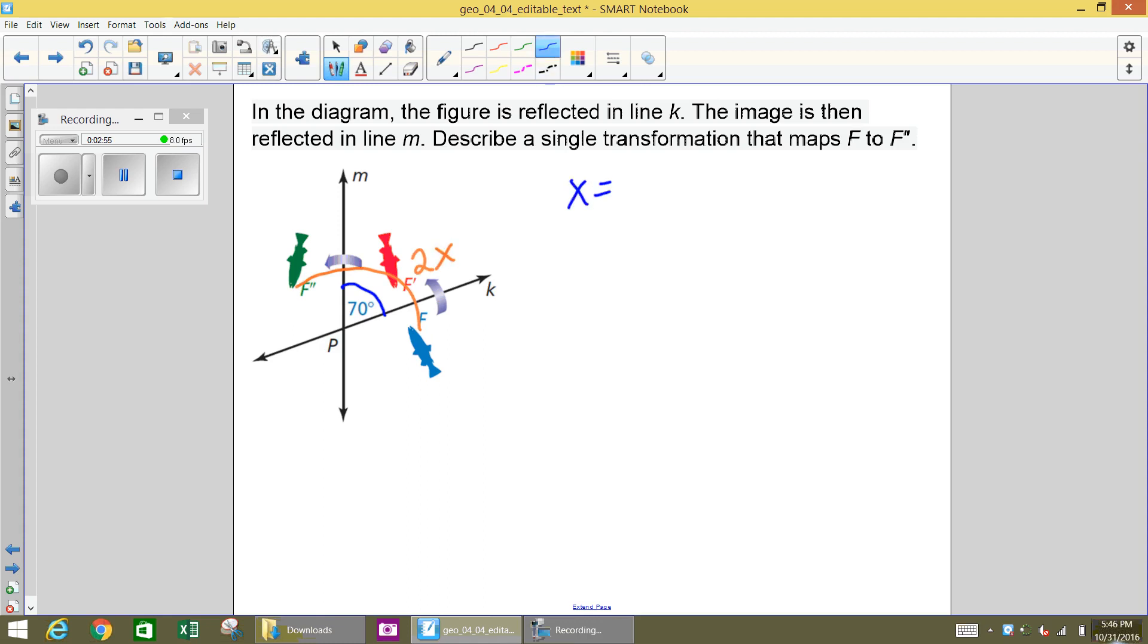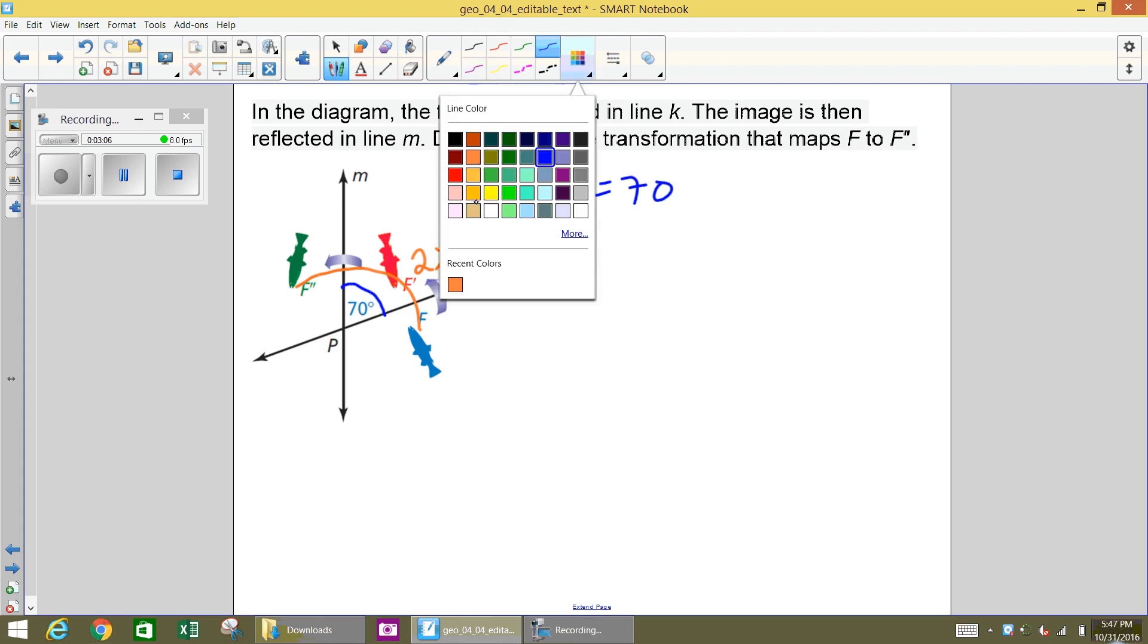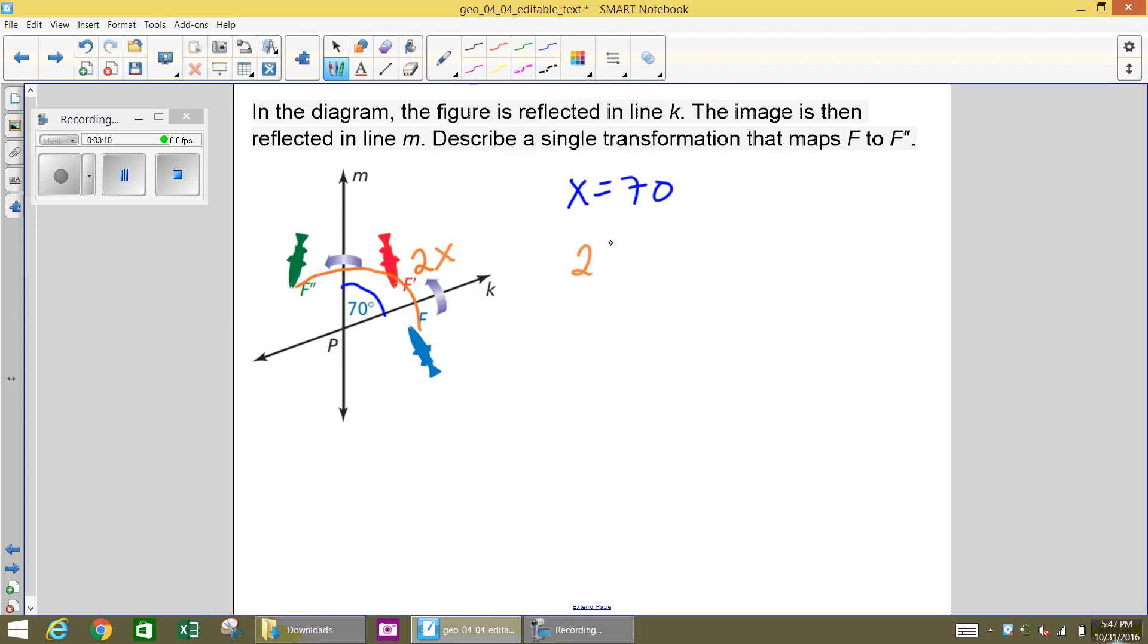So we know that X is 70 degrees. That's that angle. And we know that our angle of reflection, that angle of rotation rather, is going to be 2 times that. So we want to take 2 times the 70 to get our angle. Just plug in that 70. So what is 2 times 70? Well, 2 times 70 is 140 degrees. So the single transformation that would map F onto F'' is going to be a rotation about point P, which is that intersection point, of 140 degrees. And so that's our answer.